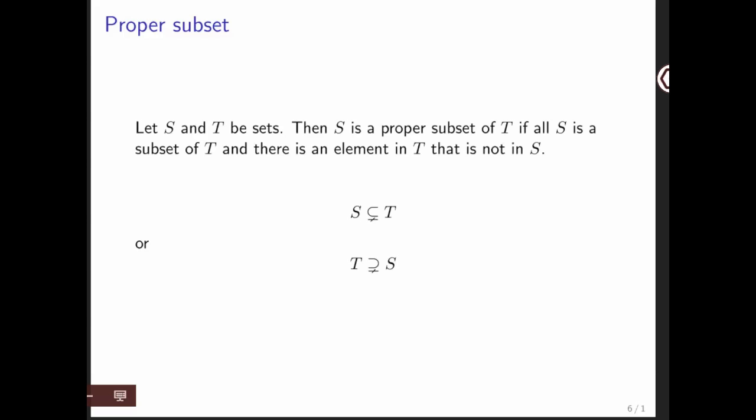Some books will use S subset of T to mean that S is a strict subset of T, which means there must be at least one element in T that's not in S. In our case, S subset of T simply means that S can be all of T or it can be missing some of the elements in T.